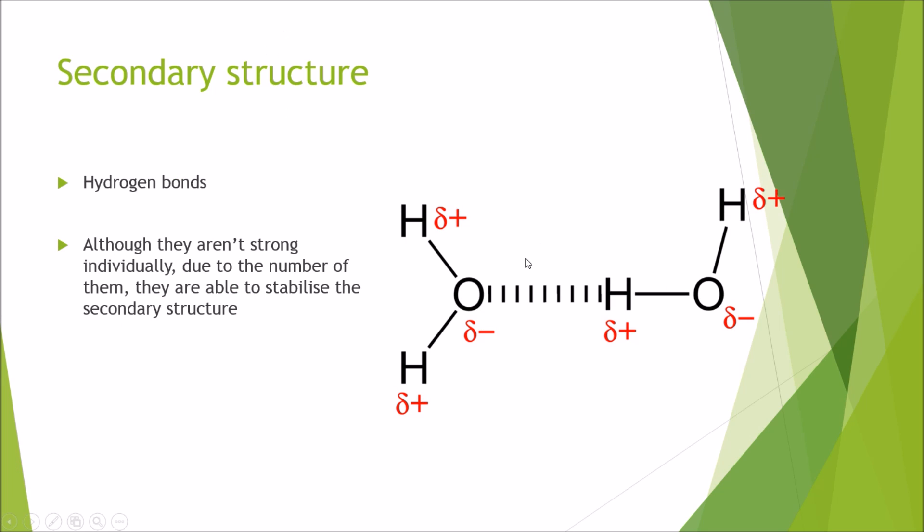To define the secondary structure, it's the regular folding of regions of the polypeptide chain. Here is a way to remember hydrogen bonds. It's just going from the hydrogen to an electronegative atom usually an oxygen in our cases. Although these bonds aren't particularly strong, because of the sheer number that you get in a protein it actually becomes quite strong. If you think of it as a shower mat with those sucker things, one isn't really strong, but because of how many there are it can actually be quite difficult to move it.